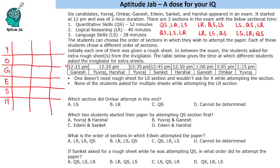Two key conditions are given. First, one does not need a rough sheet for the LS section and would not ask for it while attempting that section — so for example, at 12:20 Yuvraj will not be attempting LS, and at 12:45 Sanket would not be attempting LS. Second, students asked for multiple sheets while attempting the LR section.